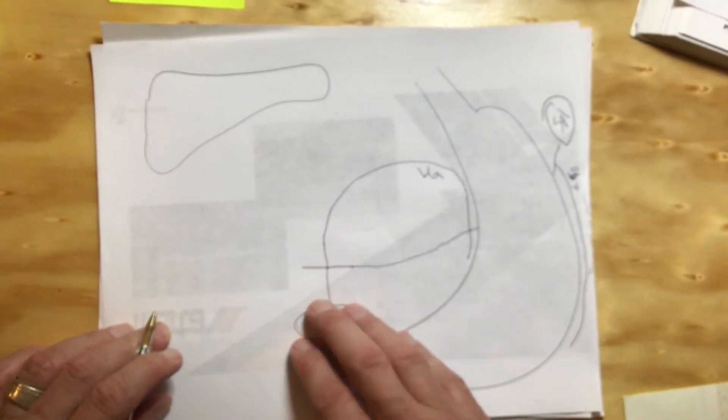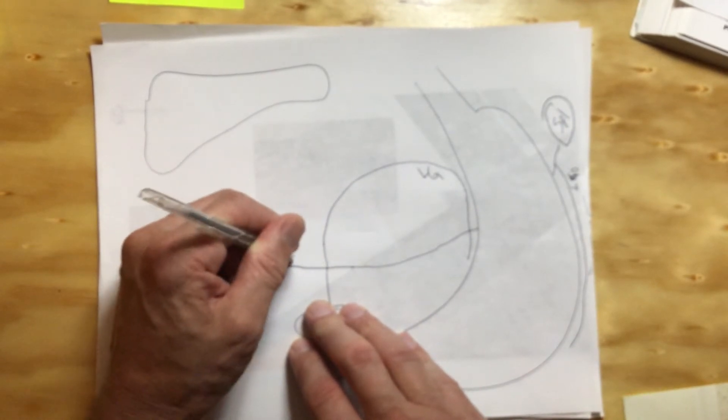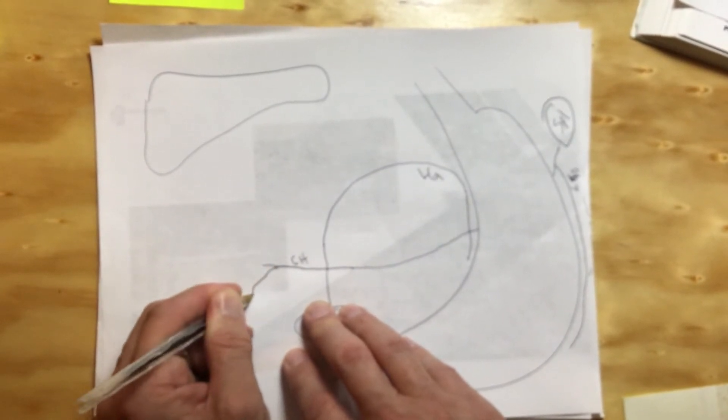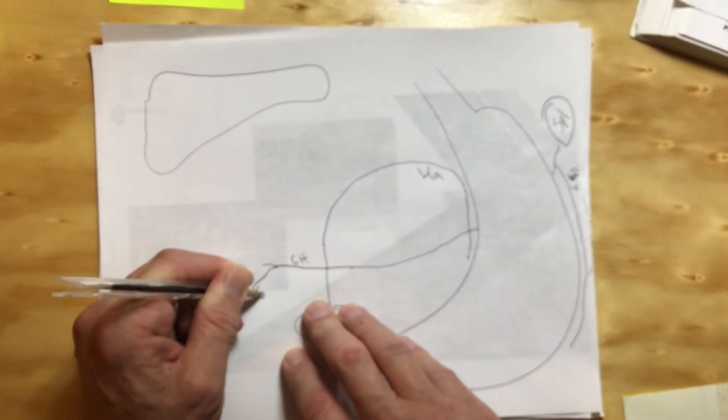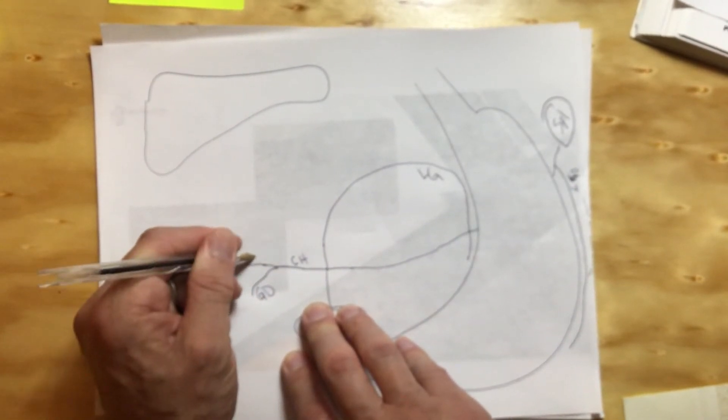This is the hepatic artery. It's more difficult. When it comes off the celiac trunk, it's first called the common hepatic. When we come along, it's got this branch here called the gastroduodenal, but it continues along now as the proper hepatic.